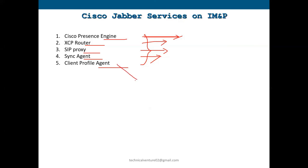The fifth service is Cisco Client Profile Agent, which is used when you have a CSF device. If this service is stopped, the CSF functionality won't show call status — even if your number is configured and you're on a call, Jabber will not display whether you are on a call or not.